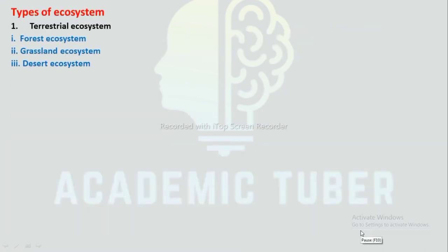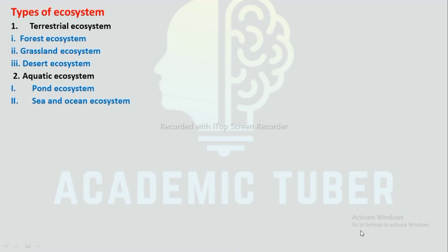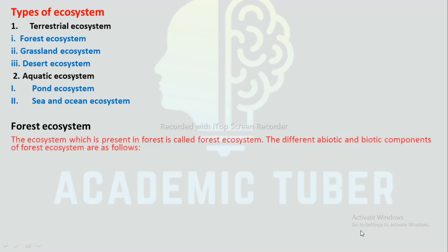Types of ecosystem: Terrestrial ecosystem and aquatic ecosystem. Terrestrial ecosystem is categorized into forest ecosystem, grassland ecosystem, and desert ecosystem. Aquatic ecosystem is categorized into pond ecosystem, sea and ocean ecosystem.